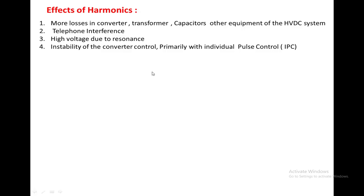Due to resonance, high voltages can occur in the HVDC system. Harmonics may also cause the control system to become unstable, majorly due to the individual pulse control technique. These are the different effects of harmonics present in both the AC and DC systems of an HVDC system.